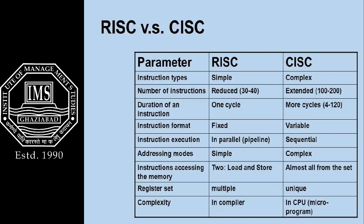Duration of an instruction: in RISC architecture the instruction is executed within one cycle, whereas CISC requires more than one cycle, usually from 4 to 120 cycles. Instruction format: RISC uses a fixed instruction format whereas CISC uses a variable format. In instruction execution, RISC uses parallel or pipeline processing, whereas CISC uses sequential execution.